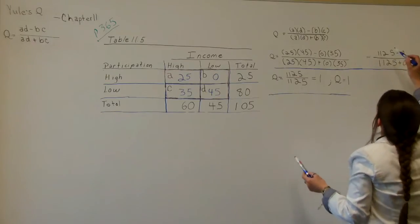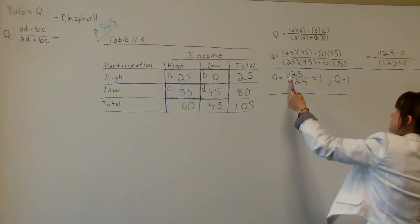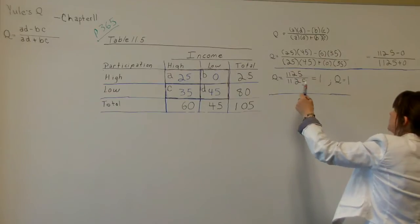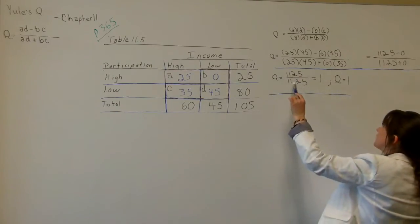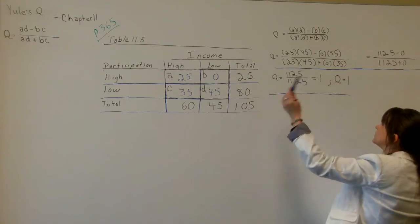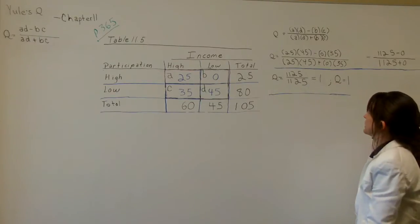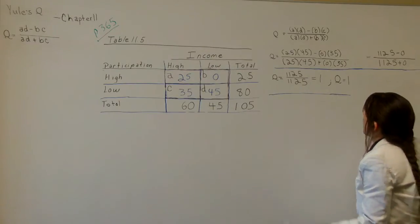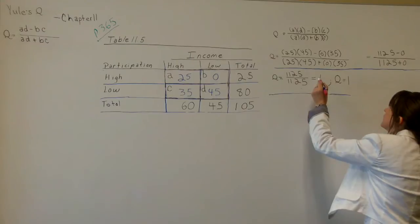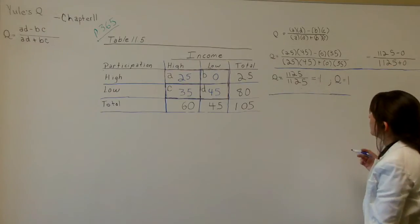Now we're going to do 1,125 minus 0, which is 1,125. So that's 1,125 over 1,125 plus 0, which equals 1,125. And 1,125 divided by 1,125 equals 1, a positive 1. So Q equals 1.